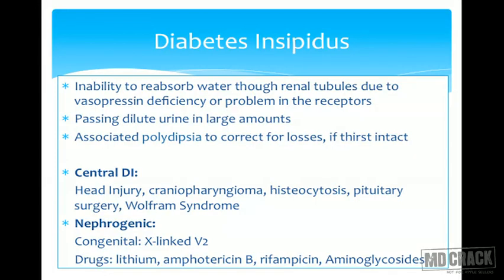Nephrogenic diabetes is either congenital or acquired because of drugs. The drugs that commonly cause nephrogenic DI are lithium, amphotericin B, rifampicin, and aminoglycosides.